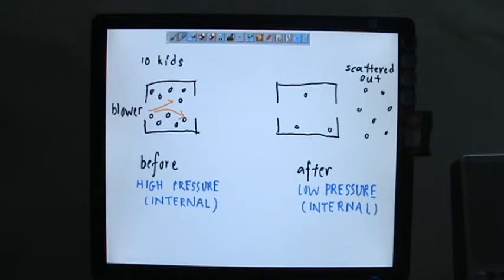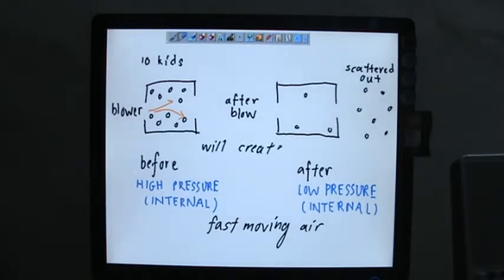So if you start blowing, after blowing here you have less kids. When less kids bump into each other, the internal pressure is a bit lower. So we can make a small conclusion that fast moving air will create a region of low pressure.